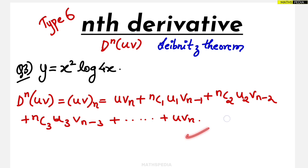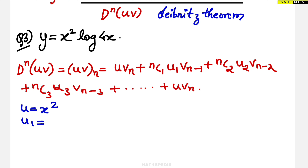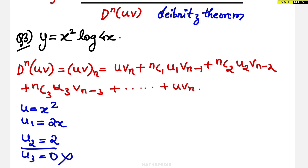In the Leibniz formula, u, u1, u2, u3 appear, but we need to find where to stop. If u = x², then u1 = 2x, u2 = 2, and u3 = 0. That means we only go till u2, because u3 becomes zero. In the formula, u and u1, u2 are valid but u3 cannot be considered, so the answer stops there.